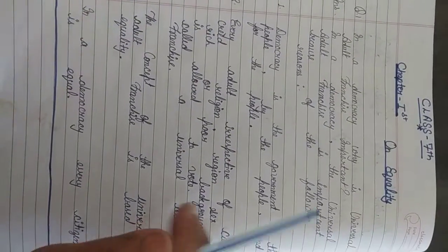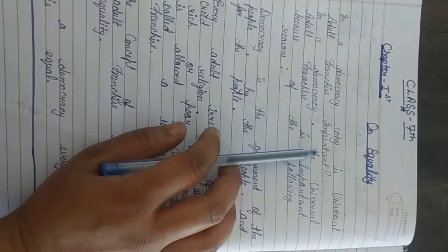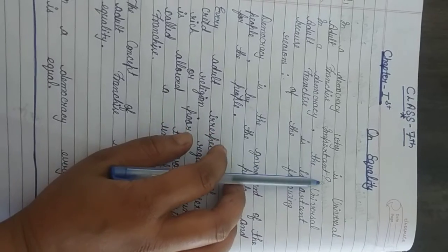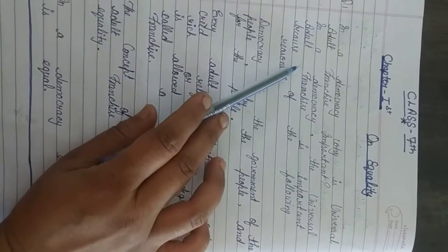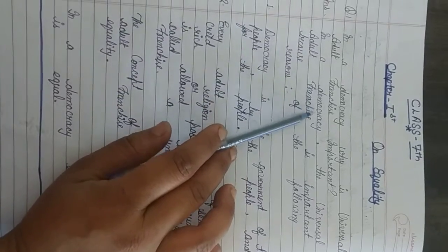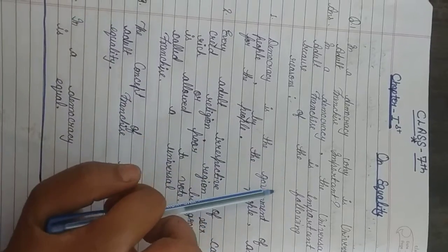Now, your first question: in a democracy, why is universal adult franchise important? So, the answer is, in a democracy, the universal adult franchise is important because of the following reason.